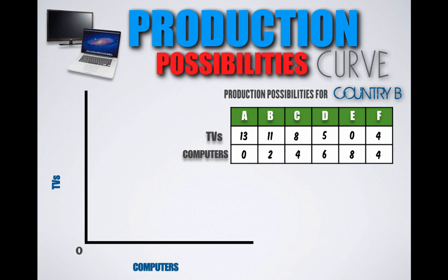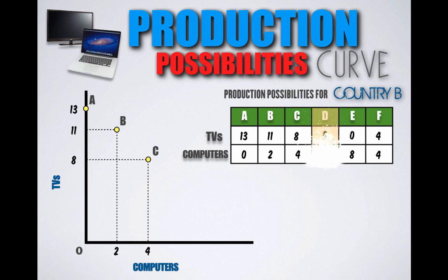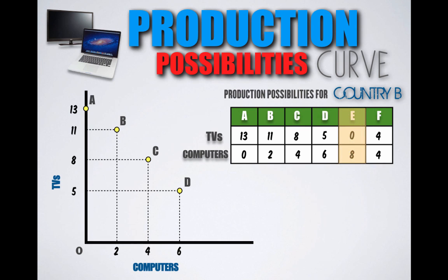We're going to take the production possibility combinations listed in this schedule and plot them on this frontier. At Combination A, Country B can produce 13 TVs and zero computers. At Combination B, 11 TVs and two computers. At Combination C, eight TVs and four computers. At Combination D, five TVs and six computers. At Combination E, no TVs and eight computers. And at Combination F, four TVs and four computers.